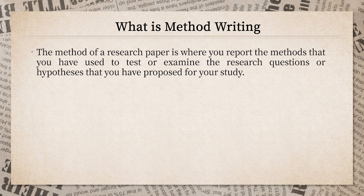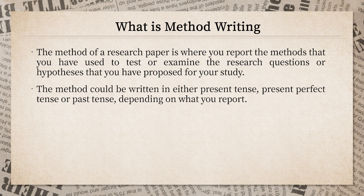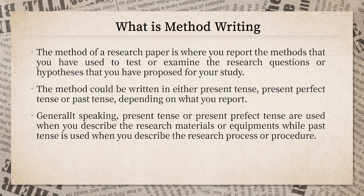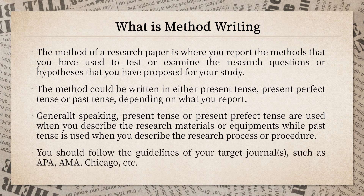Generally speaking, the method section of a research paper is where you report the methods you have used to test or examine the research questions or hypotheses proposed in your study. A method section could be written in present tense, present perfect tense, or past tense depending on what you report. You should always follow the guidelines of your target journal, such as APA, MLA, or Chicago — each has a full manual for how to write a proper academic paper.